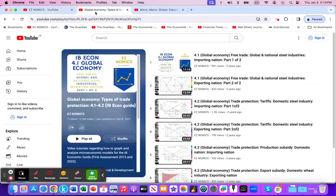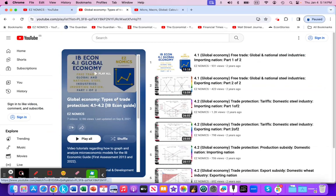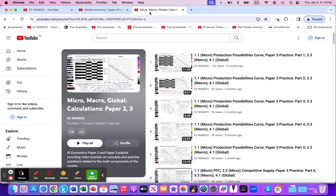This video will be part of the global economy playlist looking at types of trade protections, which includes tariffs, production subsidies, export subsidies, and quotas. You can also find this video as part of the dedicated playlist for Paper Two and Paper Three calculation practice questions.